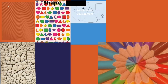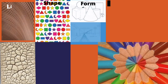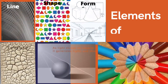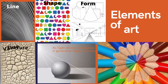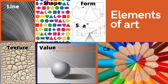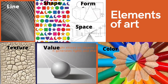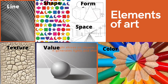Here are some examples of different elements of art and how we might see them in the world: how we see line, how we see shape, how we see form and space, texture, value, and color.